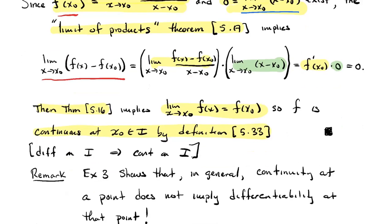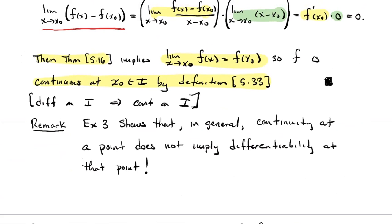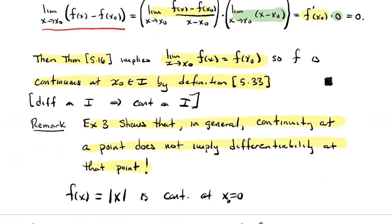The converse is false. Our example three above shows that in general the converse is not true. The absolute value function is a continuous function — you should stop the video and prove it if you need to — but we just showed that it's not differentiable at zero. So the absolute value is an example of a function that's continuous at a point but not differentiable at that point.